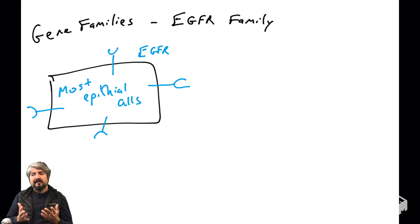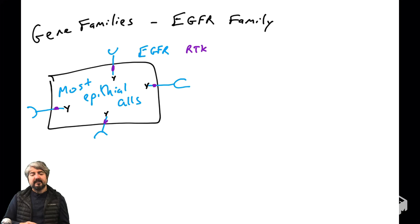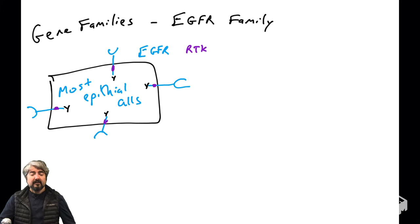A previous video covered the concept of gene families and where gene families come from. So we're introducing here the EGFR family. EGFR — Epidermal Growth Factor Receptor — is a receptor tyrosine kinase found on the surface of most human epithelial cells. In fact, many human cells in the body have a member of the EGFR family — at least one, if not multiple, members expressed.